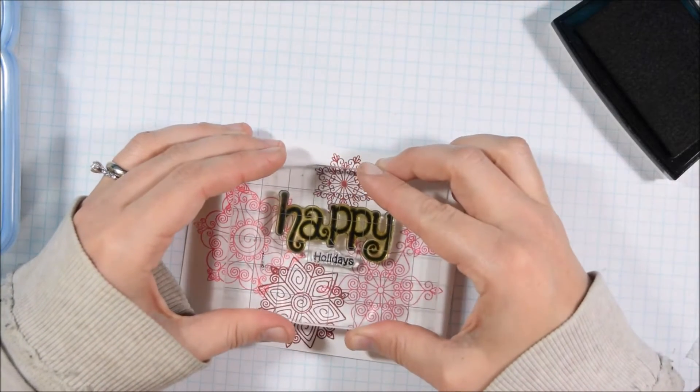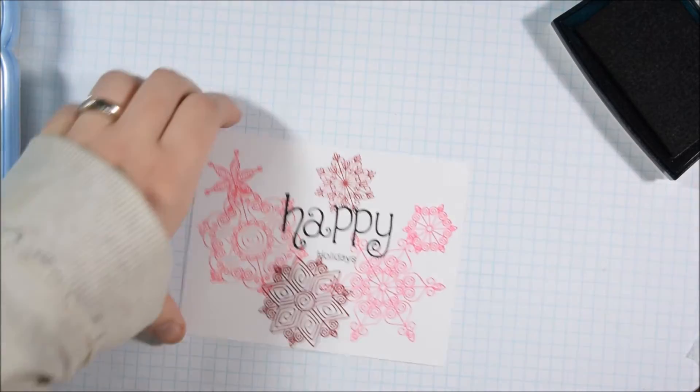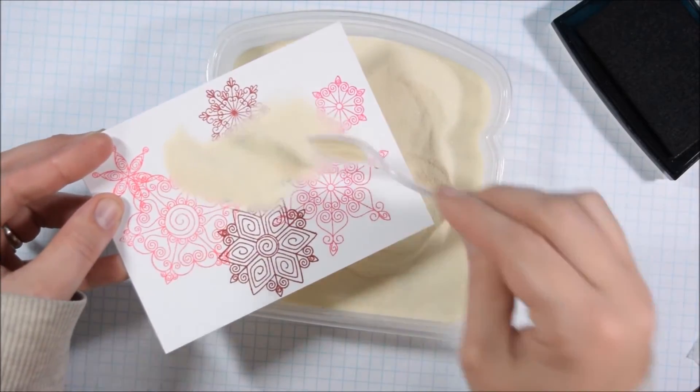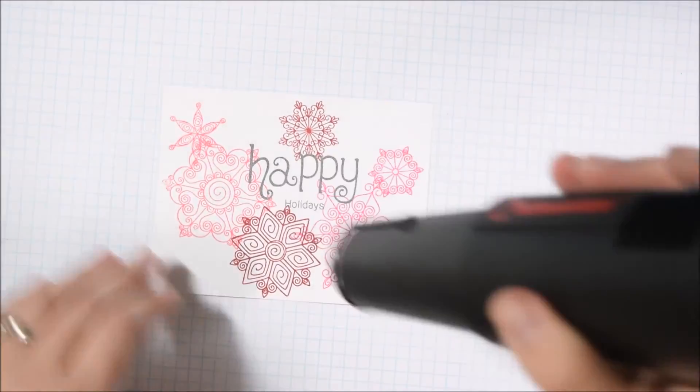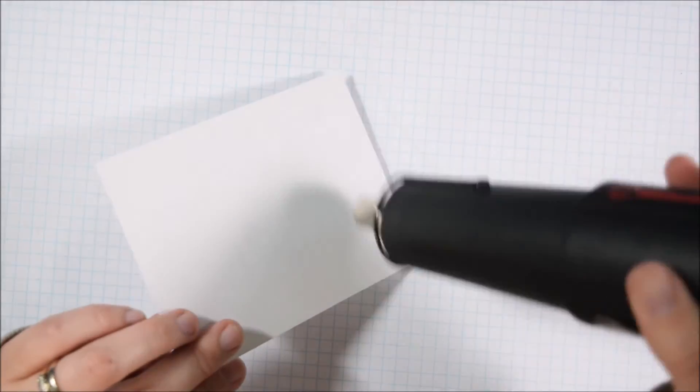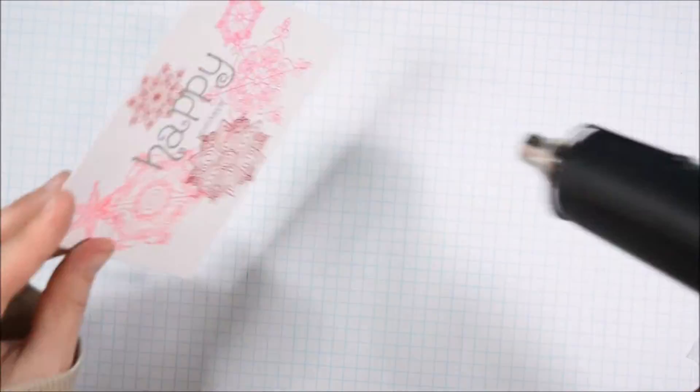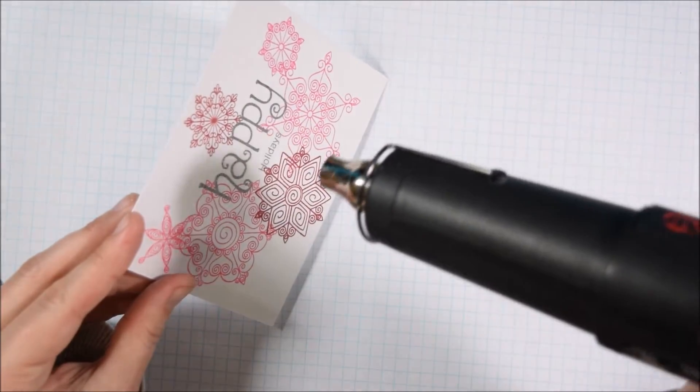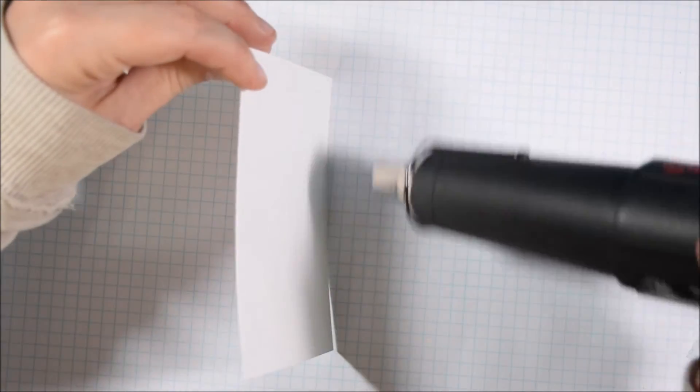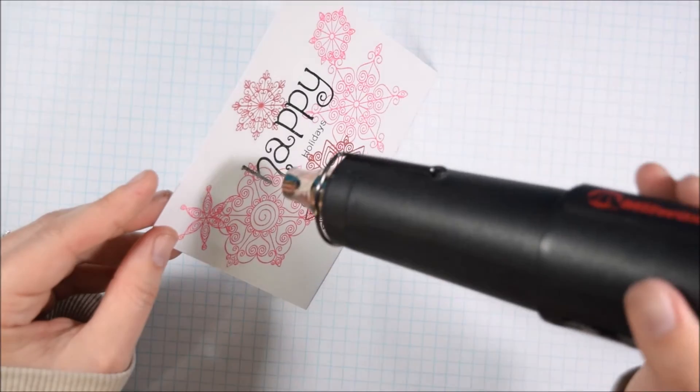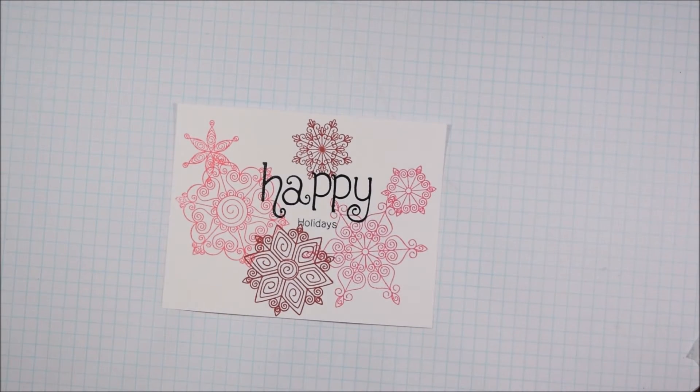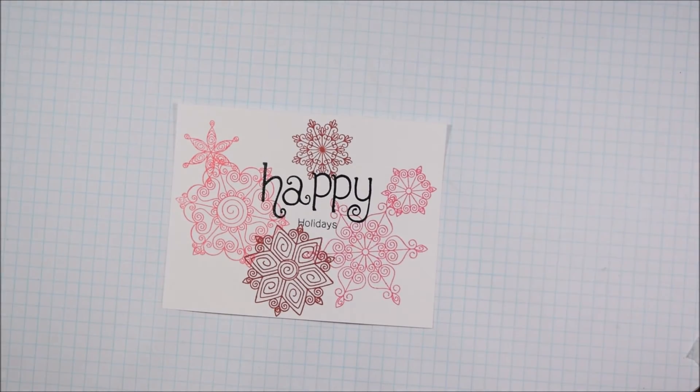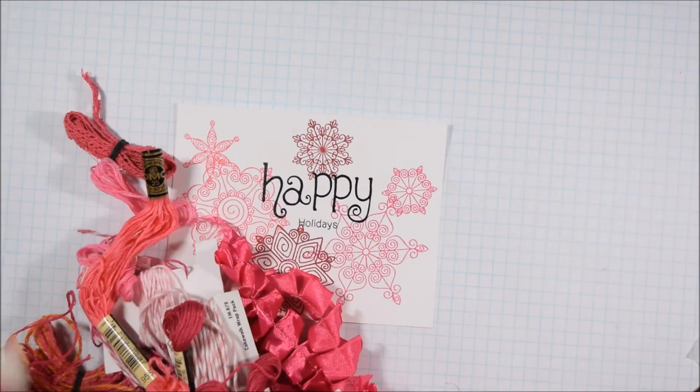I stamped down the sentiment with a block using Versafine onyx black ink because it is a sticky ink that will hold this clear embossing powder. By clear embossing the sentiment, even though it does add a little bit of extra time to the process, it makes it a lot more readable so I felt like that was important and it adds a little bit of interest to the card. If you're getting this card you might think that it's just a simple piece of pattern paper with a stamp on it or even that it's printed like that, so by adding that little bit of dimension with the embossing powder it just makes it feel a little bit more special and makes it a little bit more clearly handmade.